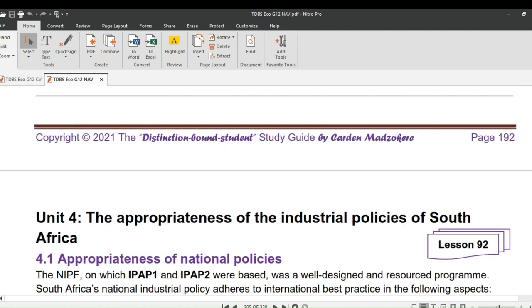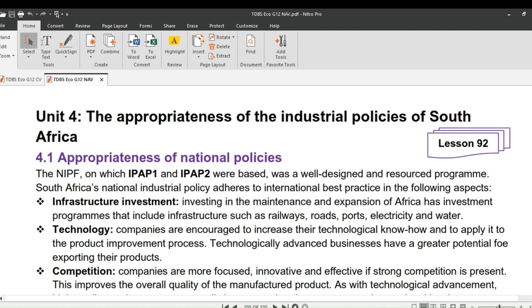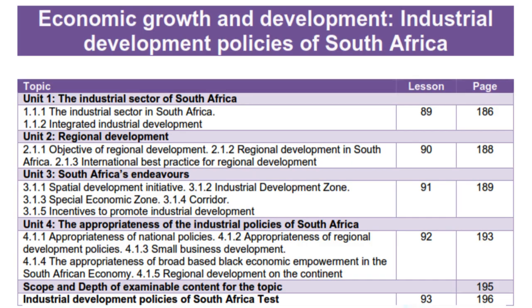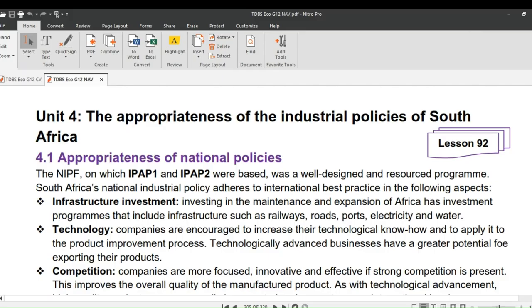Let's now look at Unit 4: the appropriateness of the industrial policies of South Africa. This is the last lesson under industrial development policies before the test on the topic, which will be Lesson 93. The NIPF, on which IPAP1 and IPAP2 were based, was a well-designed and resourced program. Remember we covered the National Policy Framework and Industrial Policy Action Plan in Lesson 89.